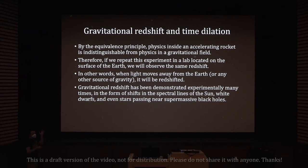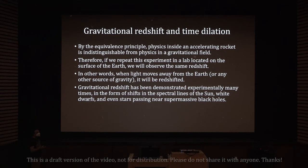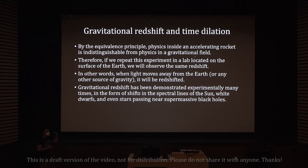Gravitational redshift has been demonstrated experimentally many times, in the form of shifts in the spectral lines of the Sun, white dwarfs, and even stars passing near supermassive black holes. By observing spectral lines shifting, we know if a star is moving away or toward us and at what speed — but there is also an additional shift due to gravitational redshift that we can detect on top of any other kind of shift.